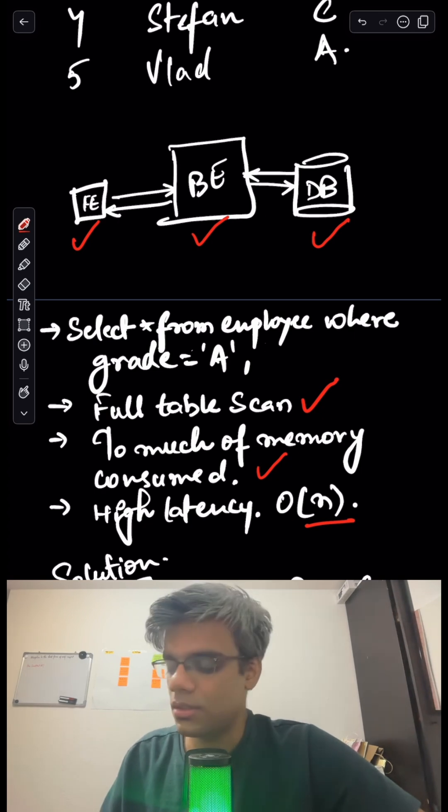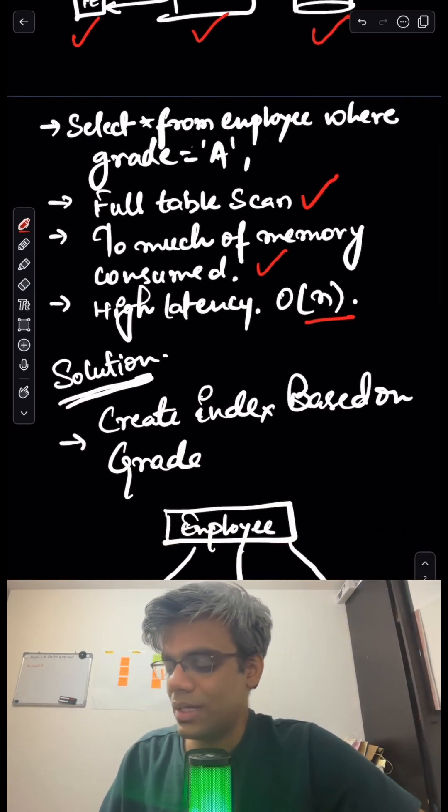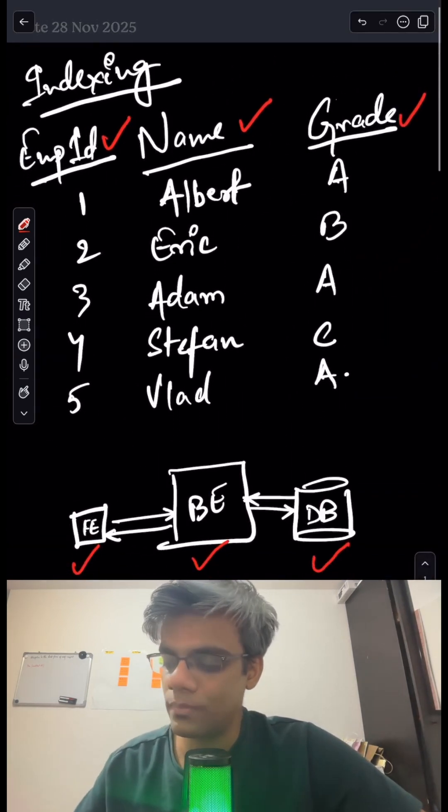How do we overcome this? I have a solution for you. How about we create an index based on grades—that is, an index based on the grade column.